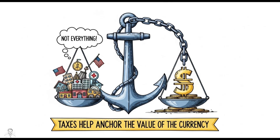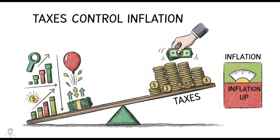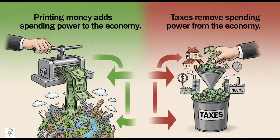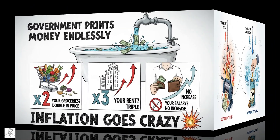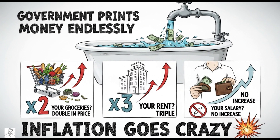Taxes don't fund everything, but they help anchor the value of the currency. Truth number two: taxes control inflation. Let me say this in the simplest way — printing money adds spending power to the economy; taxes remove spending power from the economy. Think of it like a thermostat: government prints, temperature goes up; government taxes, temperature cools down.